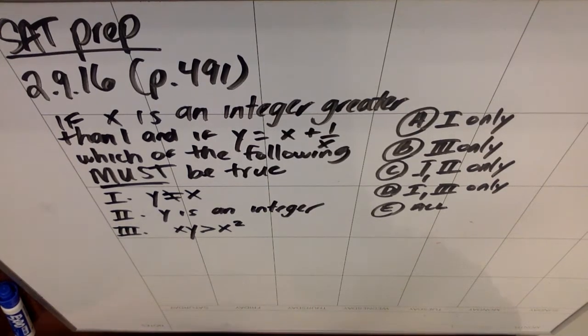This is the last question in a section, and this is an old SAT prep book. So the questions got harder as the questions moved on, meaning this is the hardest question in this section based on the way the SAT book was designed at that time. So if x is an integer greater than one, and if y equals x plus one over x, which of the following must be true?